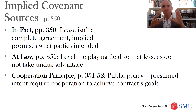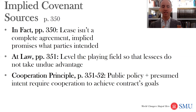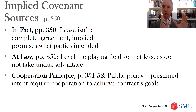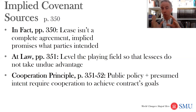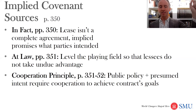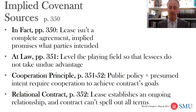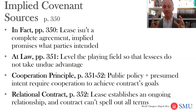Sometimes people say implied covenants are really part of this cooperation principle — that the oil and gas lease is a cooperative venture where both parties are supposed to benefit. So we're going to imply terms that are consistent with public policy and that we presume parties would have wanted to make this work well for oil and gas production and compensation to the lessor landowner. That would tend towards the at-law view — we don't want you to contract out of those covenants, although maybe if you're really explicit you can get rid of an implied covenant.